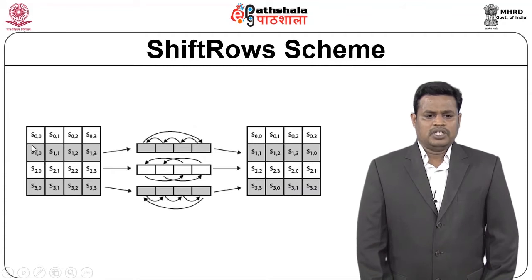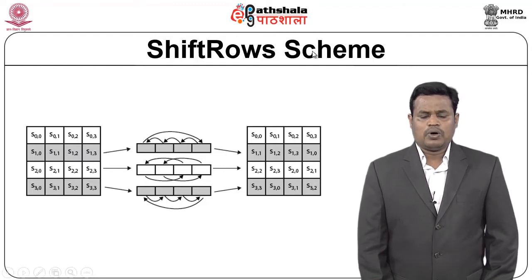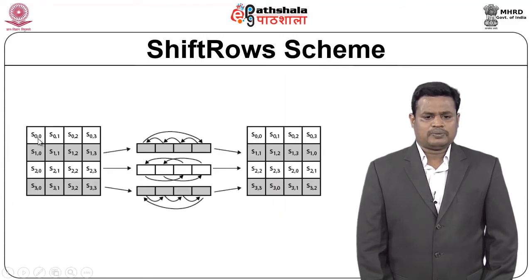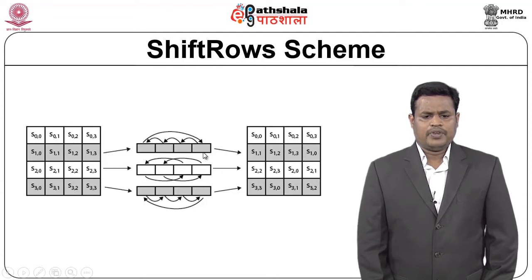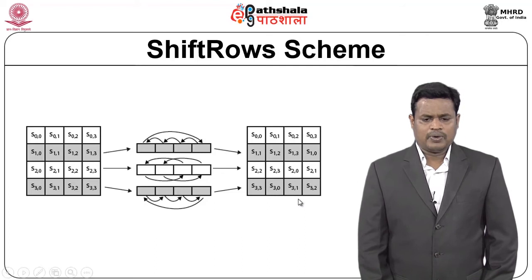This state is obtained from the previous operation, substitution byte. Taking the state values: s(0,0), s(0,1), s(0,2), s(0,3) — the first row is not shifted and gets directly to the output. For subsequent rows, you can see how shifting happens to generate the new state: 1 byte, 2 bytes, 3 bytes respectively. So for the last row: s(3,3), s(3,0), s(3,1), s(3,2).